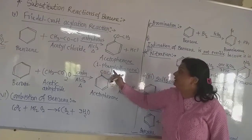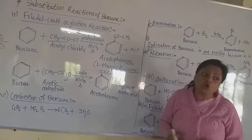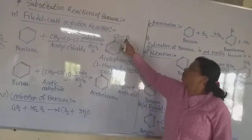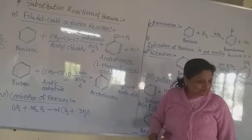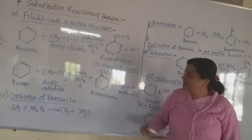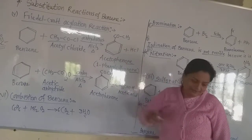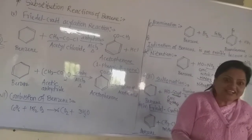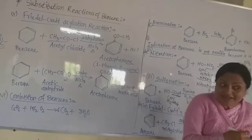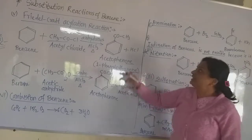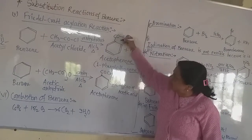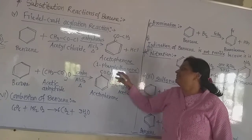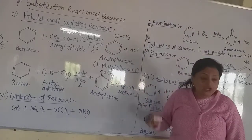In IUPAC nomenclature, acetophenone is called 1-phenyl-ethanone. Ethanone means two carbon atoms, so it is ethanone. And this is the phenyl ring — when a hydrogen is replaced from benzene, the benzene ring is called the phenyl ring. So the IUPAC name is 1-phenyl-ethanone.